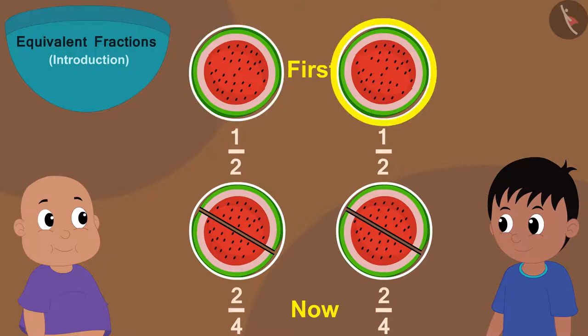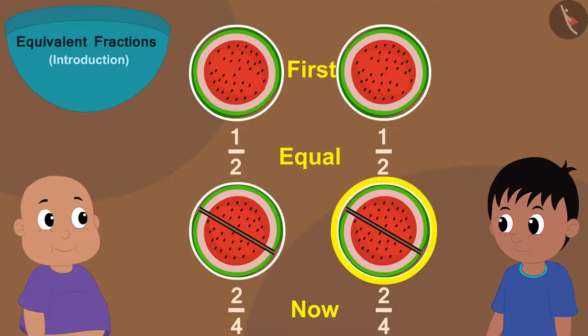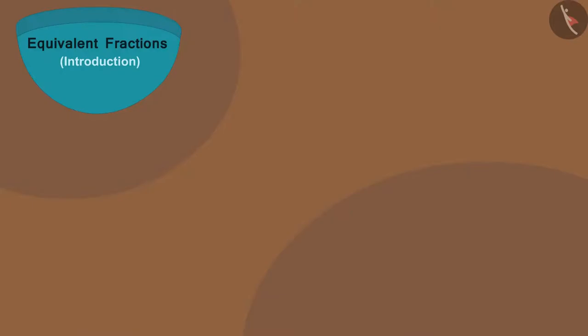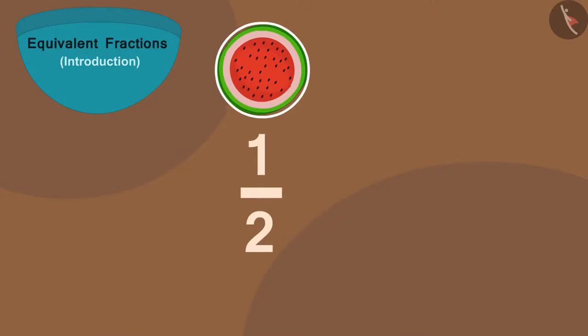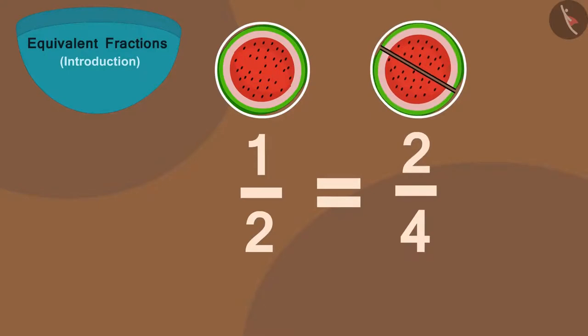Here, this one part is equal to these two small parts. And because the amount of watermelon they are getting is still the same, we can write that the fraction one by two is equal to the fraction two by four.